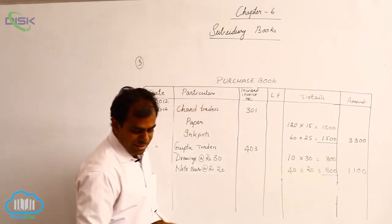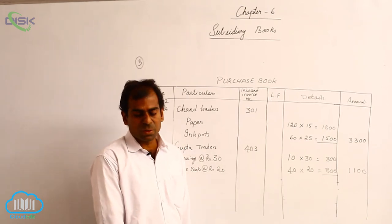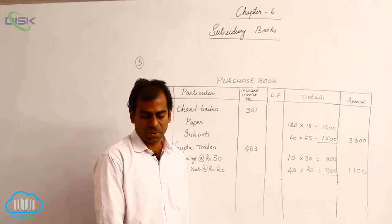Now let us see the next transaction on the 10th. It is purchased goods from Goel and Company for cash, rupees 3000.